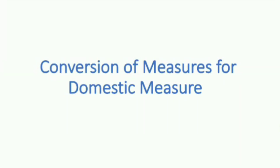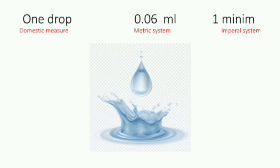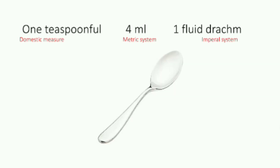Conversion of domestic measures: one drop is equal to 0.06 ml in the metric system and 1 minim in the imperial system. One teaspoonful is equal to 4 ml in the metric system and 1 fluid drachm in the imperial system.